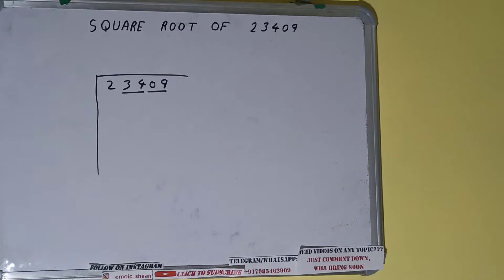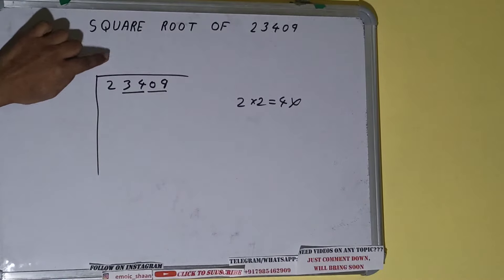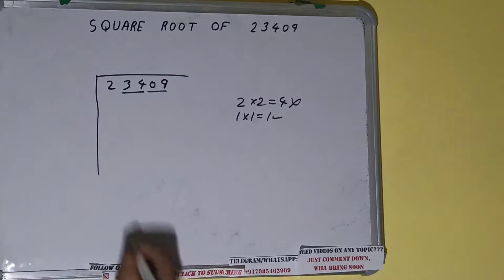The rule is whatever number we write here, we have to write here also. So if we write two here and two here, we'll be having four which is greater than two, so we cannot use it. If we write one here and one here, we'll be having one which is good to use.